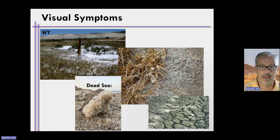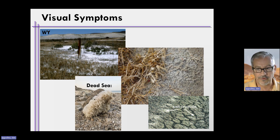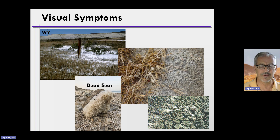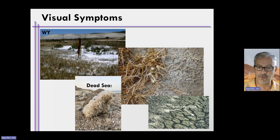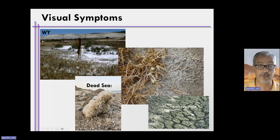Now that you have an idea of how salts build up, what are the visual symptoms? Usually they're pretty straightforward. We typically see areas that have either a white precipitate, or the soil just looks different than the surrounding area — it may look darker in color on the soil surface. Sometimes we see large cracks or polygons that form in a soil, like you see in the bottom right-hand corner of this picture. This is Wyoming — a low-lying area where water has accumulated, evaporated, and left salts behind.